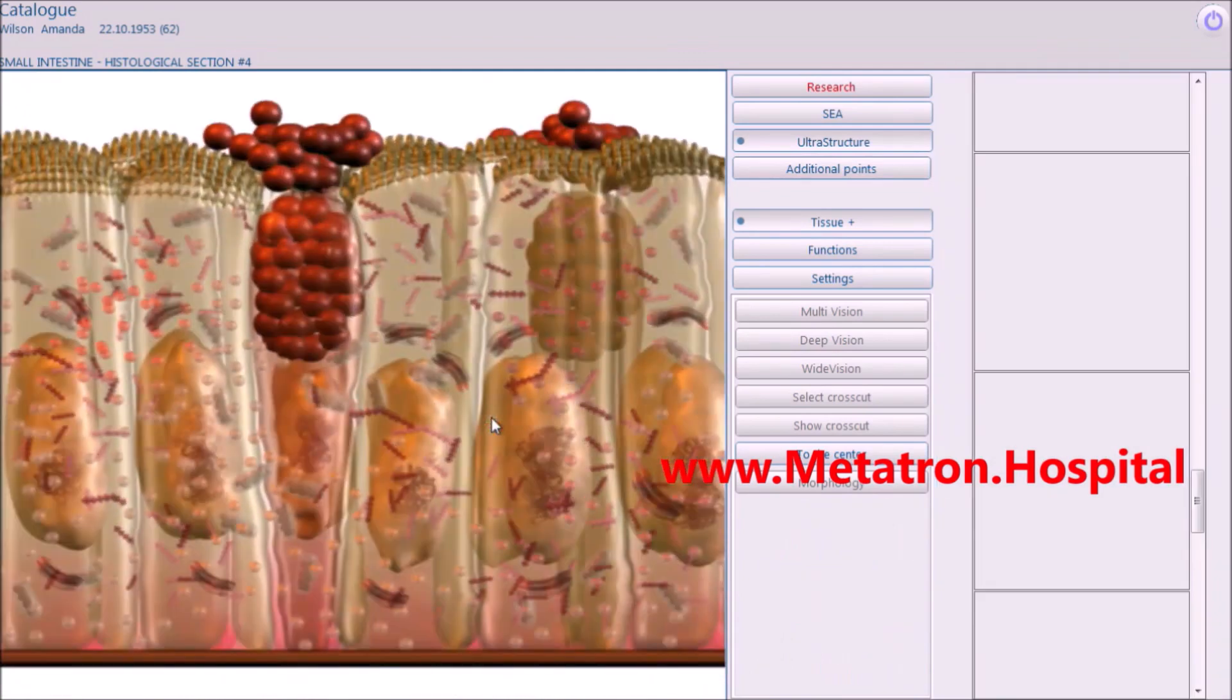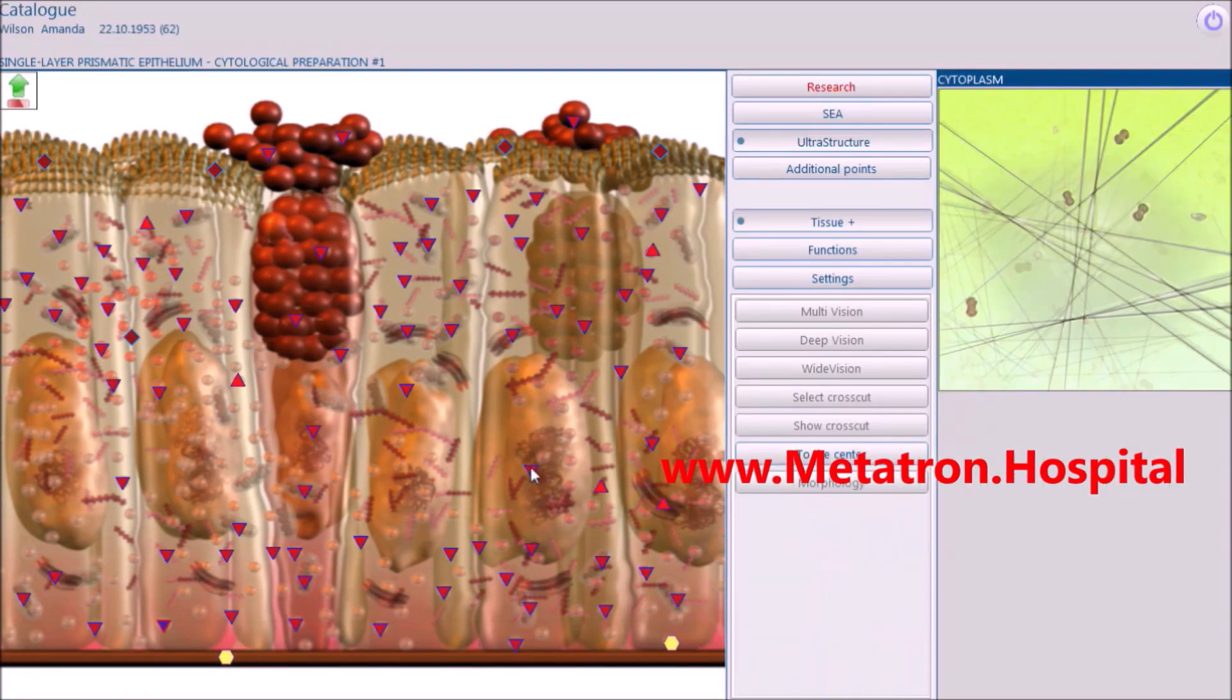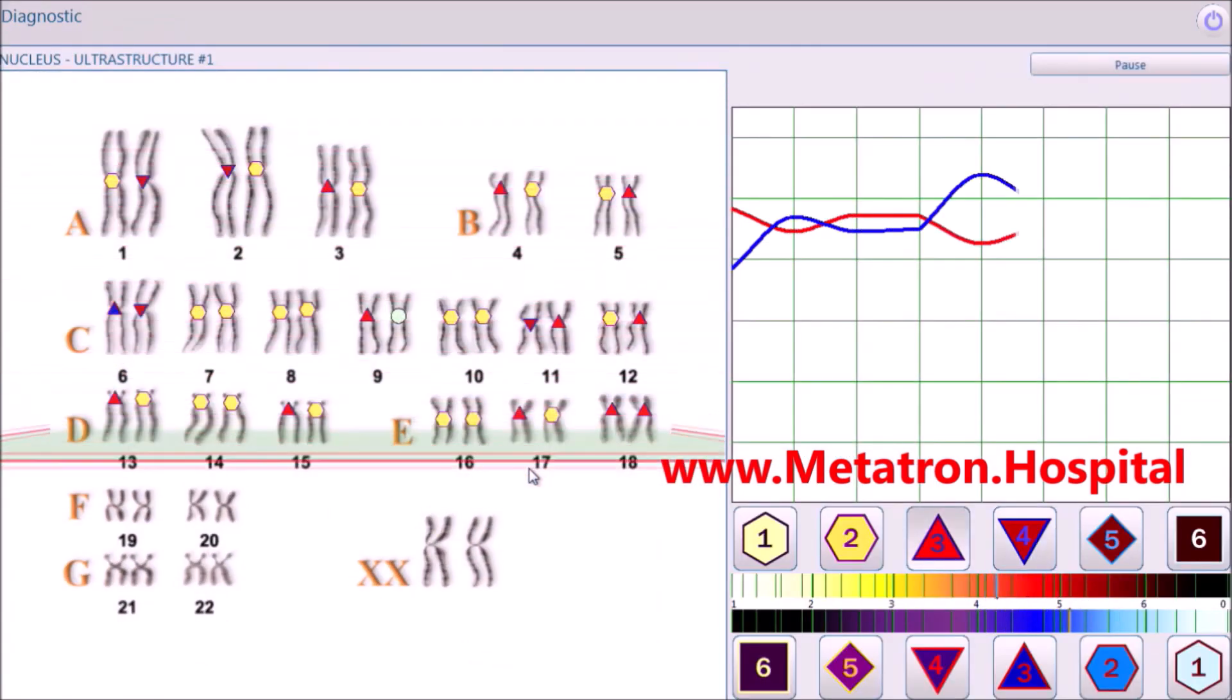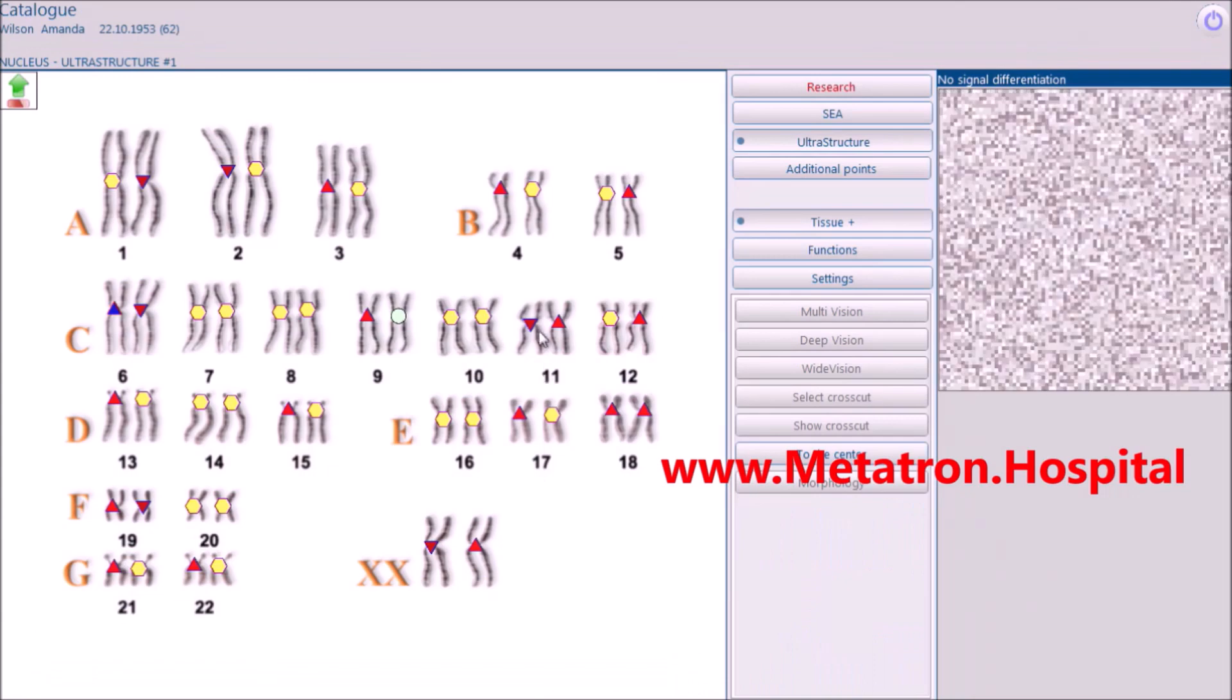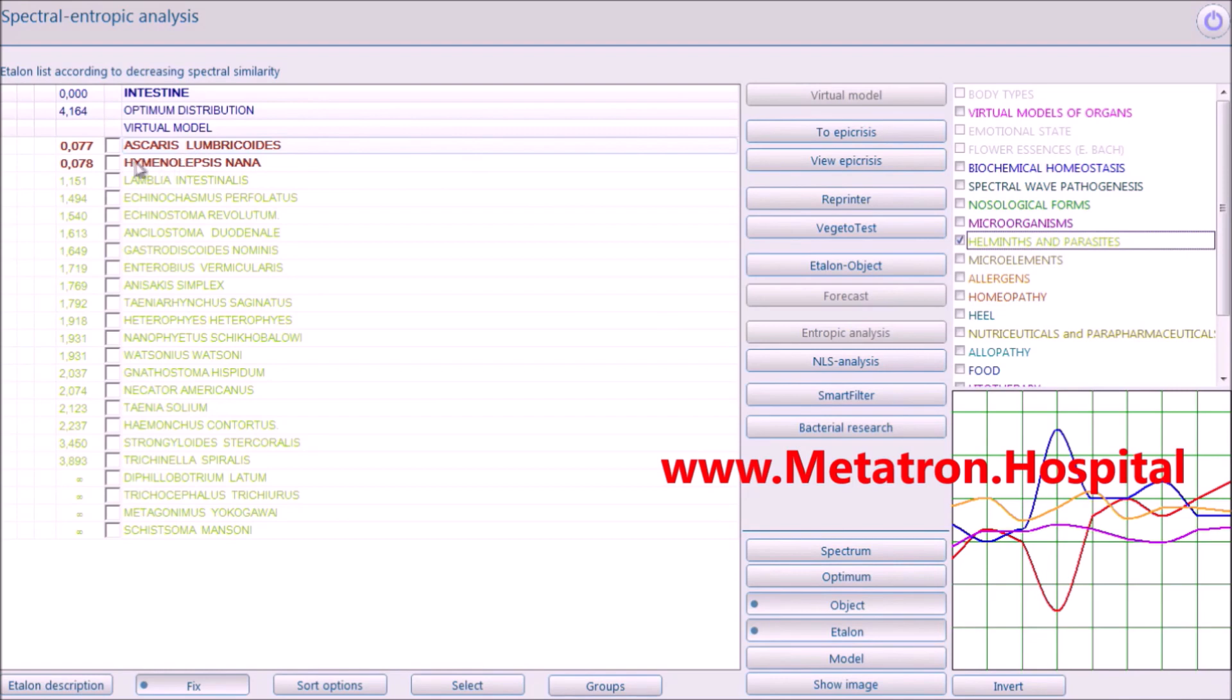The equipment used is the Metatron Remote, the best in the latest Metatron Hospital Bioresonance System which has been upgraded for remote mode by Medicomat Ltd. All functions and capabilities of Metatron Hospital are fully available in remote mode.